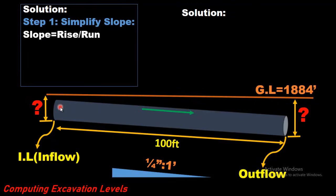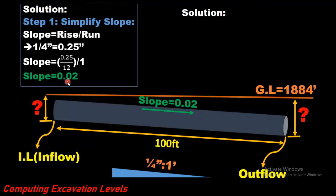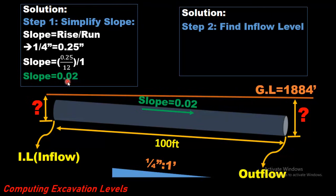Solution: Step 1 — Simplify the slope. Slope equals rise divided by run. The slope is 1/4 inches per 1 foot. So 1/4 means 0.25 inches. Converting to feet, we divide by 12, so the slope becomes 0.02 feet per foot. The slope has been simplified.